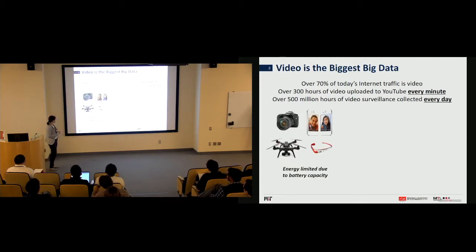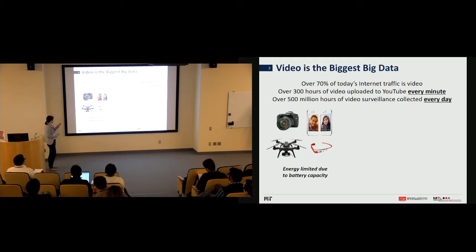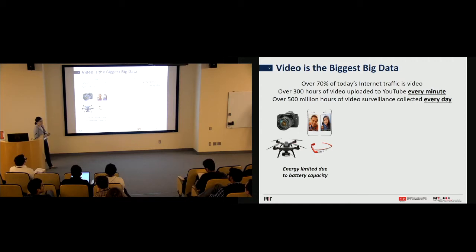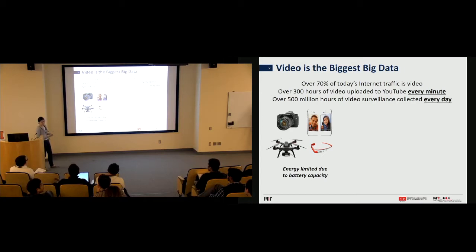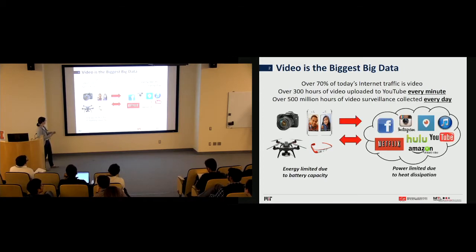A lot of this video growth has happened because video is captured on battery-operated devices — these days your phone must have a camera on it. Although ideally you'd like to do a lot of processing on these edge devices, energy is quite limited, so you have to send it to the cloud. This is often undesirable for privacy reasons or for latency reasons — for example, a drone navigating can't afford to send video to the cloud and wait for analysis.